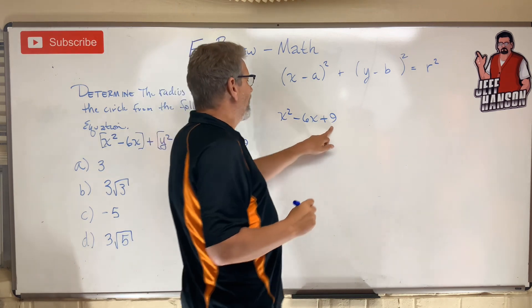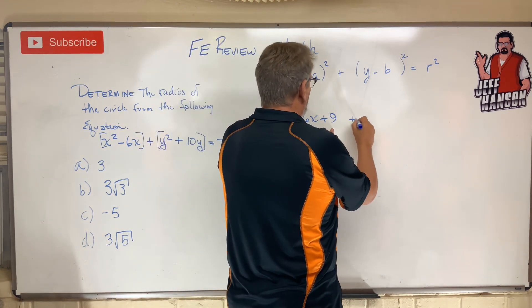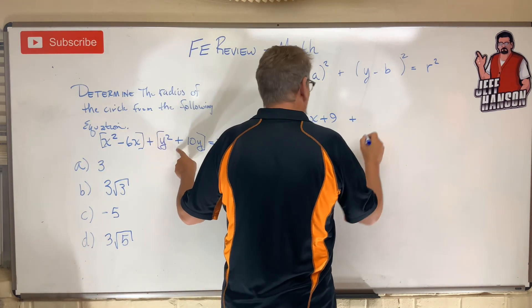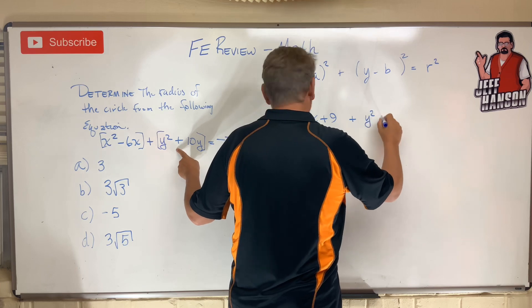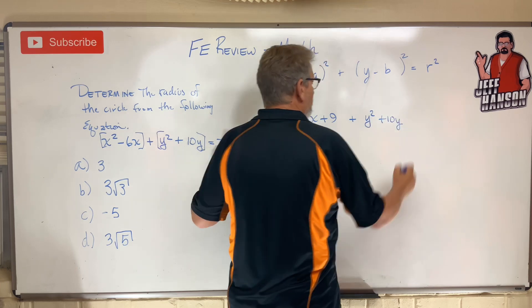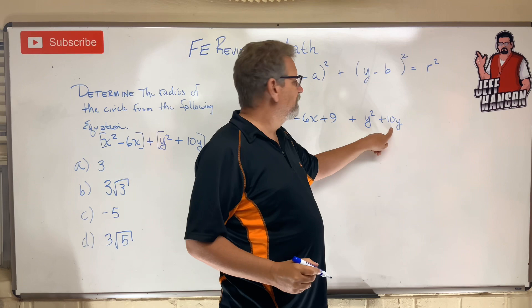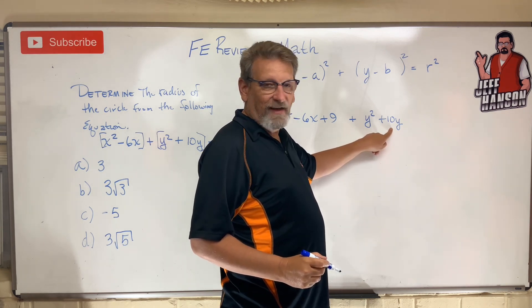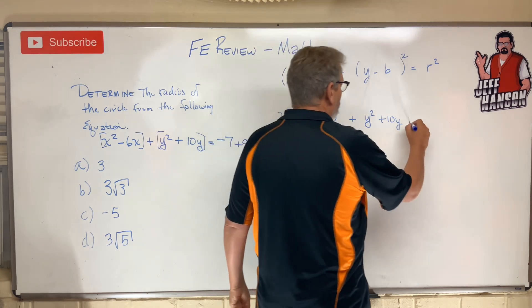You got to add the same thing to the other side. Plus, here comes the next one: y² + 10y. Again, complete that square. Half of that is 5, squared is 25, so plus 25.